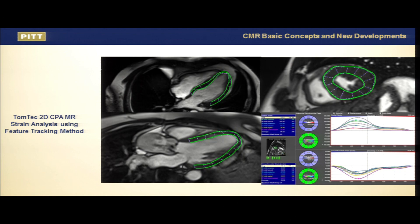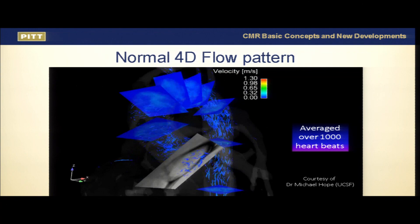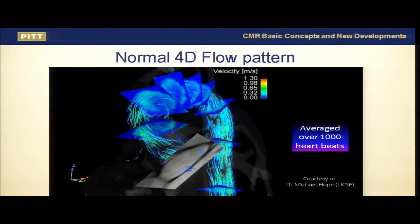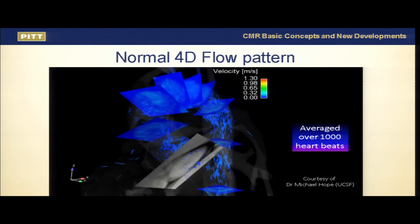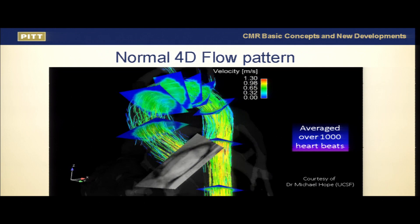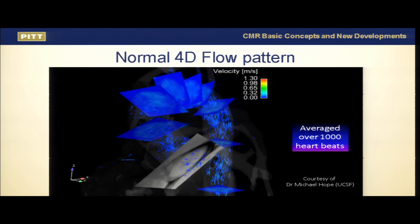4D flow is something you're going to hear a lot about. This is courtesy of collaborator Mike Hope from UCSF, one of the pioneers in this field. The acquisition takes about 10 to 15 minutes, averaging over 1,000 heartbeats, creating path lines to analyze flow disturbance. You can see regurgitation at the end and the displacement of particles that can be analyzed.